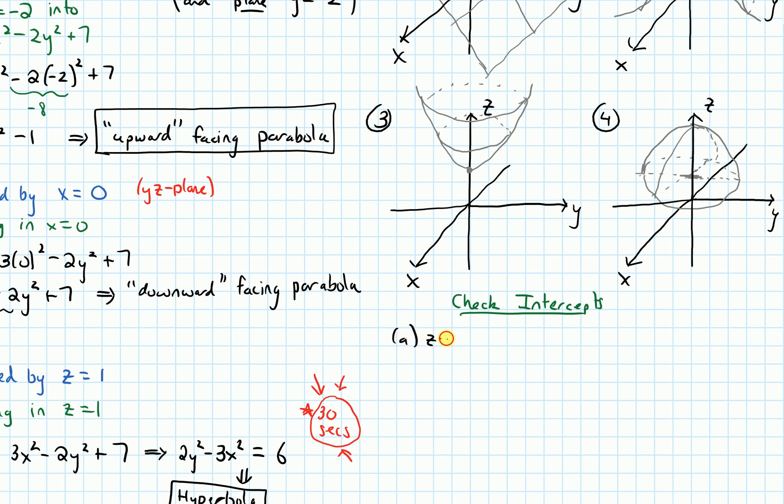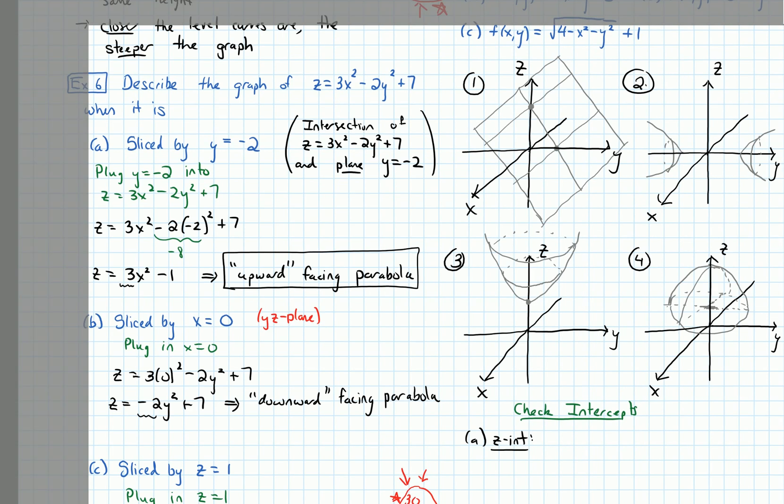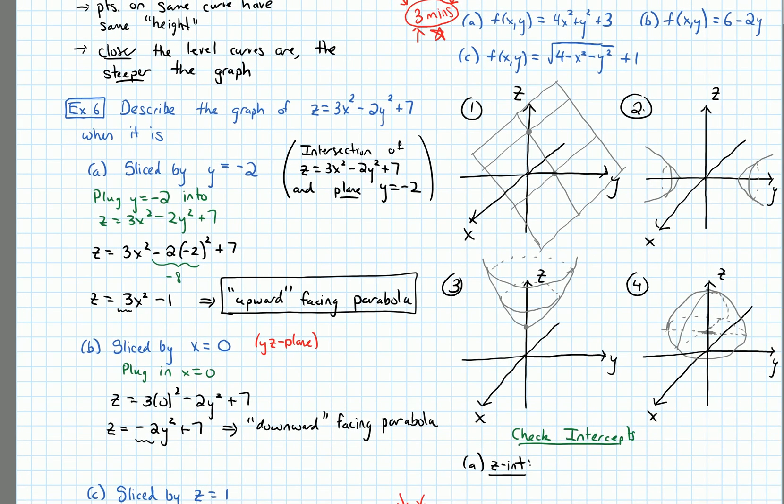If I do the Z intercept for the function in A, let's see, can I zoom out enough where I can see it? Okay, let's see if we can do this. So we would get that Z equals, and for the Z intercepts, I need to plug in 0 for the X and for the Y. So we get 4 times 0 squared plus 0 squared plus 3. So that equals 3.